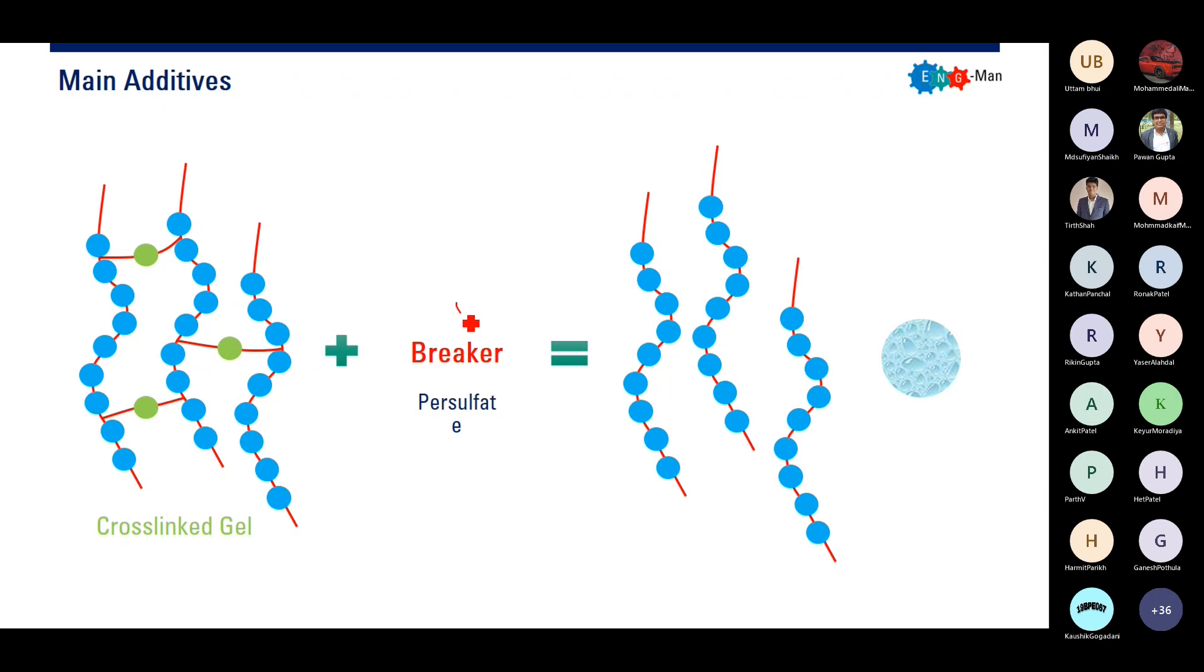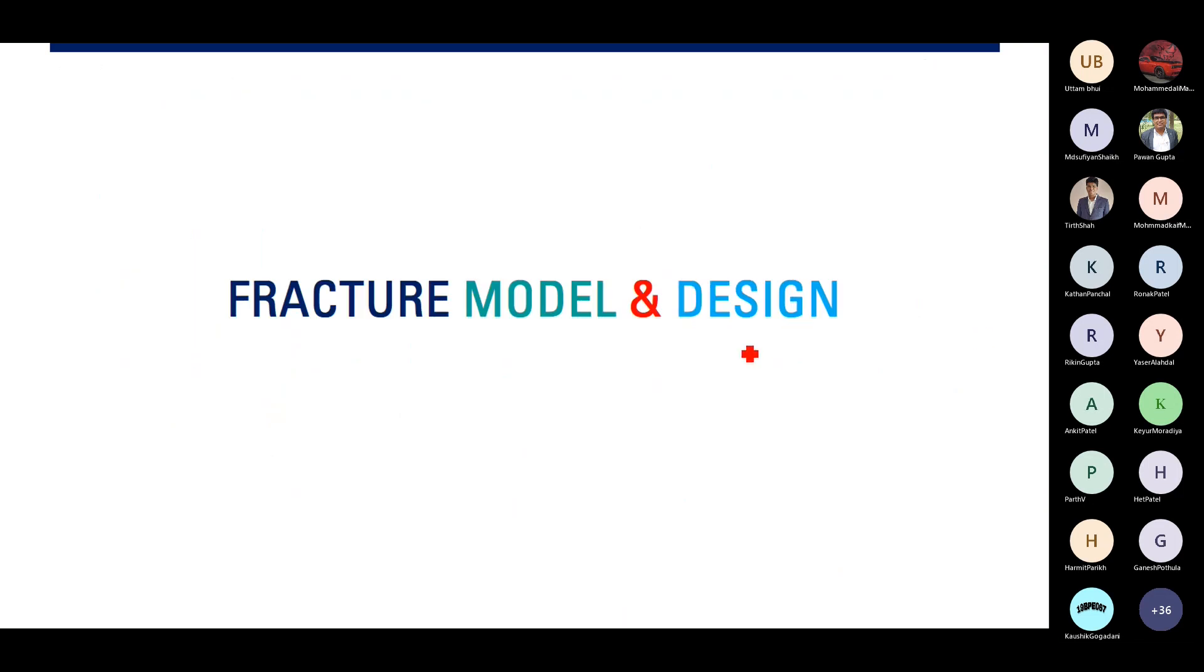How? By using breaker. Usually the popular breaker is using persulfate. The breaker will cut this cross-linking so that we will have linear gel and water, and it will loss into the reservoir. So there will be no gel that can obstruct the flow, can hinder the flow, can plug the fracture. There will be no gel again because the linear gel and the water can loss into the reservoir due to its low viscosity.